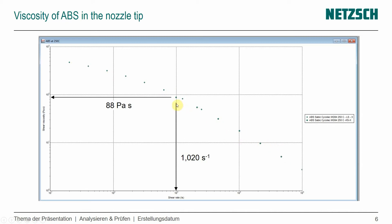And you can see that at 1,020 reciprocal seconds, the viscosity is really low with 88 Pascal seconds. So this is helping us to understand what viscosity we really have in the 3D printing process. But you always need to understand your nozzle dimensions and your flow rates.